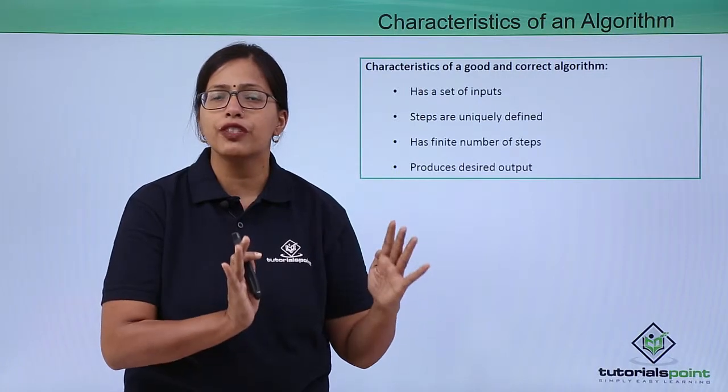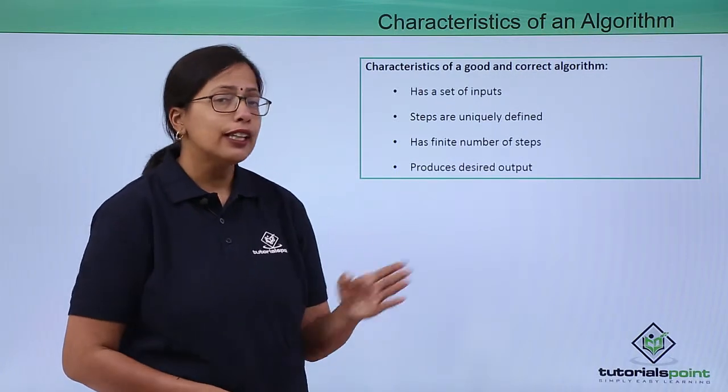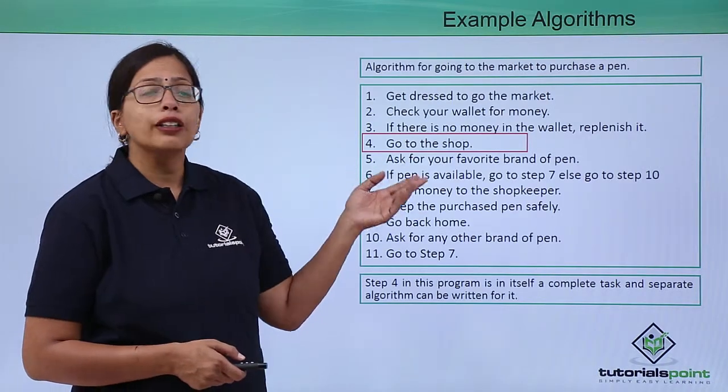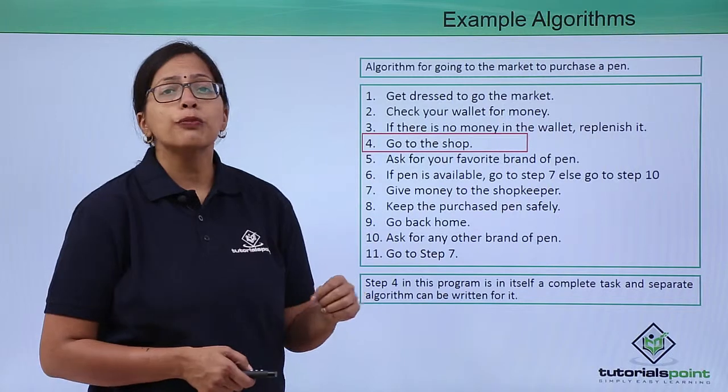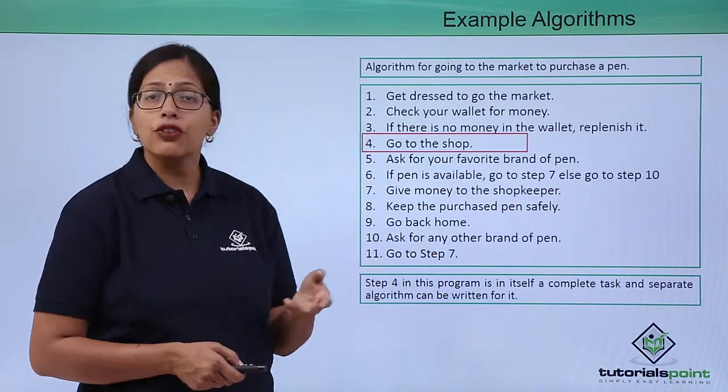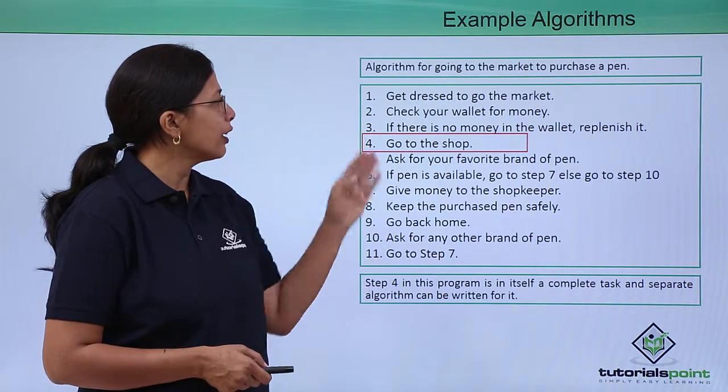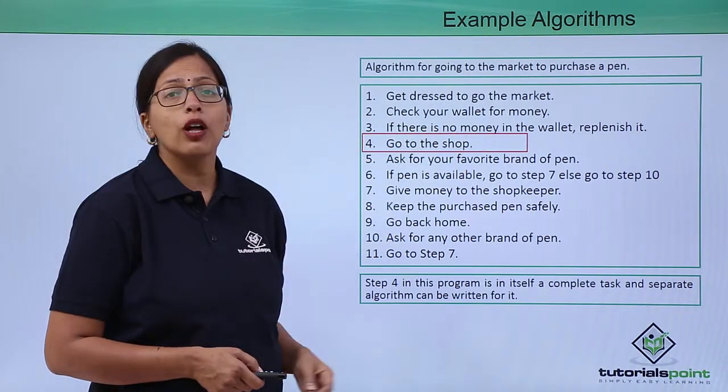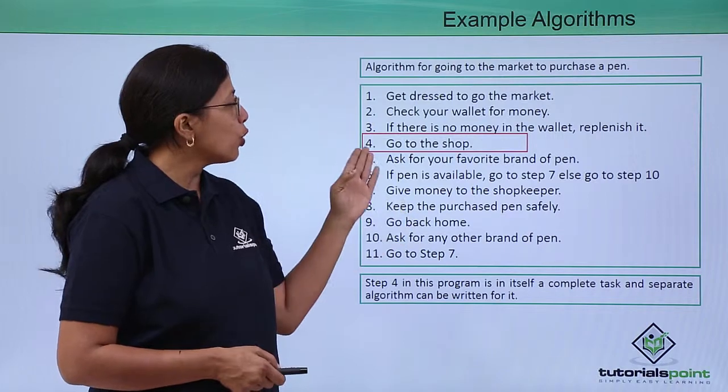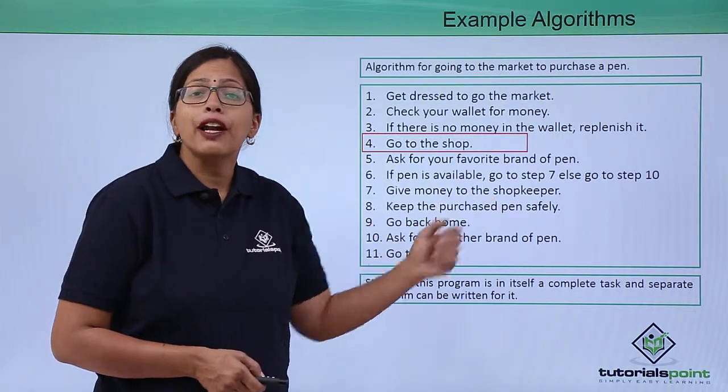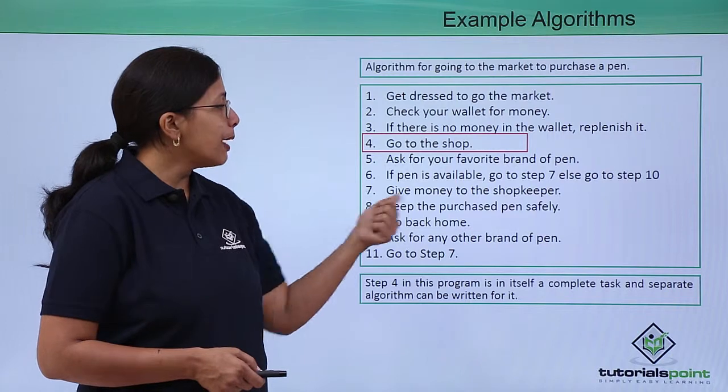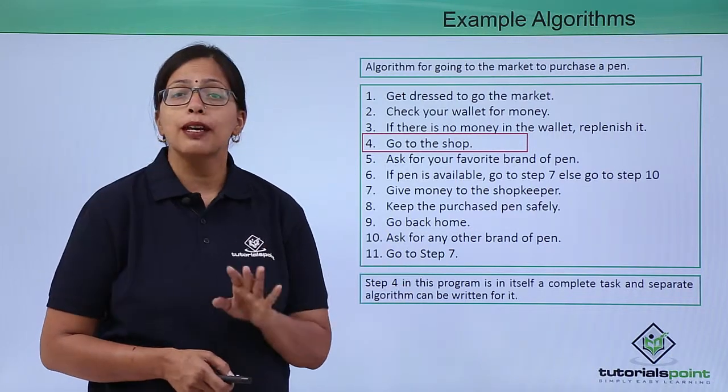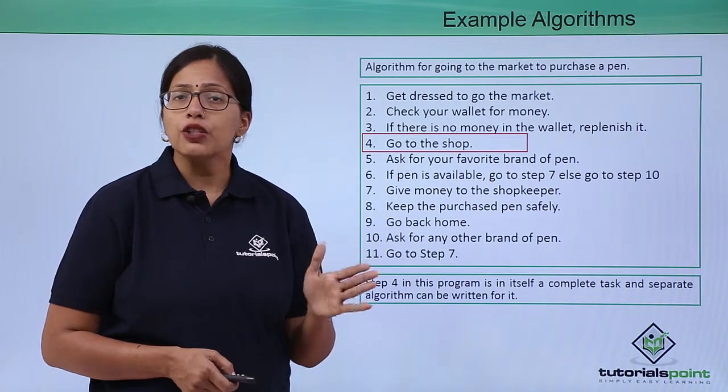Let's take an example. This is an algorithm for going to the market to purchase a pen. Step 1: Get dressed to go to the market. Step 2: Check your wallet for money. Step 3: If there is no money in the wallet, replenish it. Step 4: Go to the shop. Step 5: Ask for your favorite brand of pen.